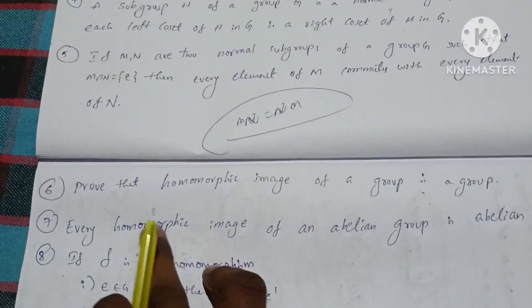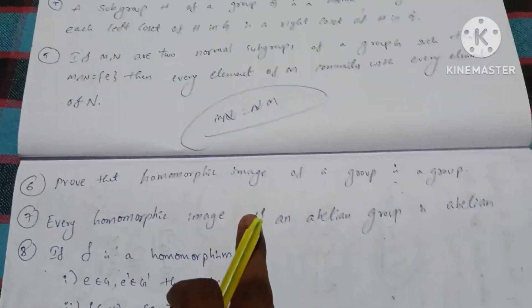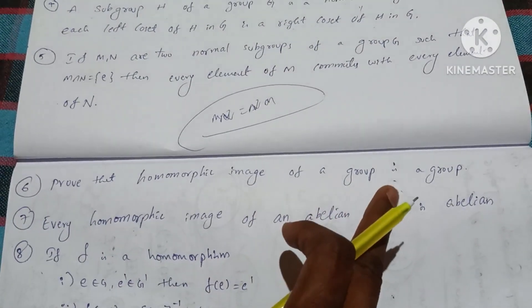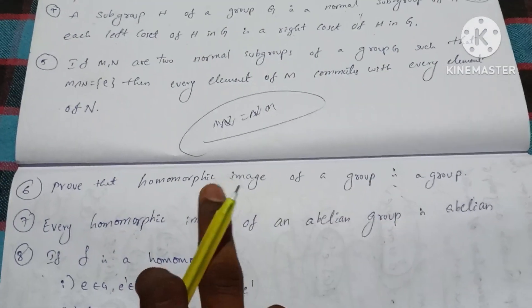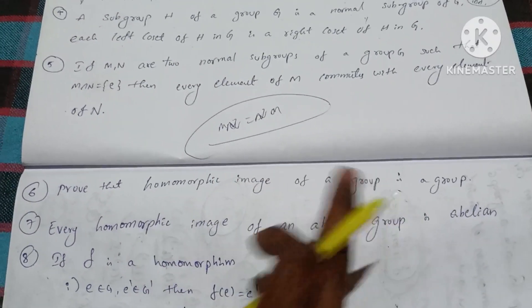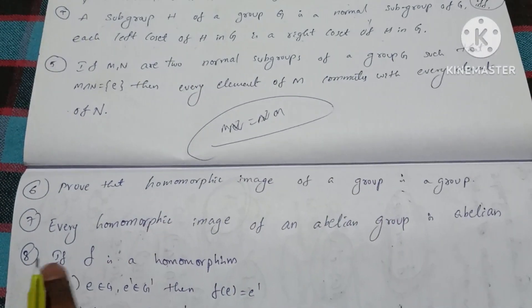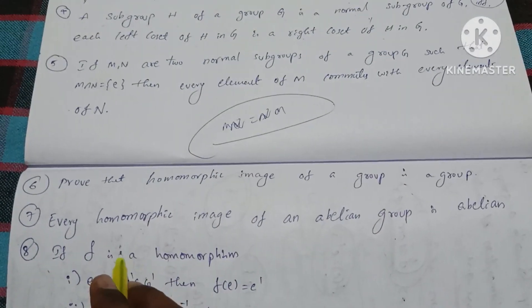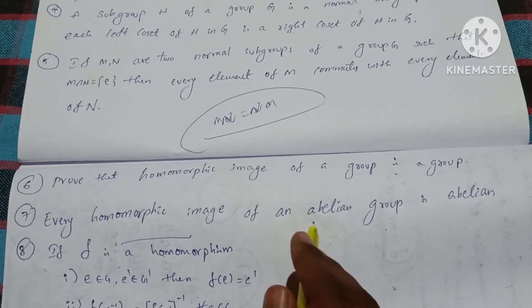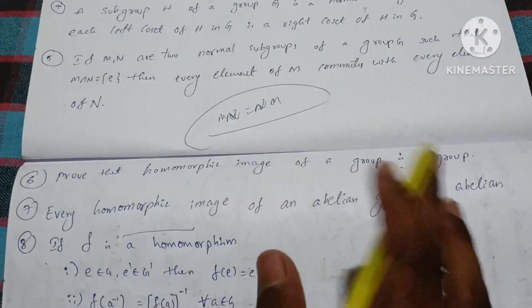Sixth question: Prove that the homomorphic image of a group G is a group. Seventh question: Every homomorphic image of an abelian group is abelian.